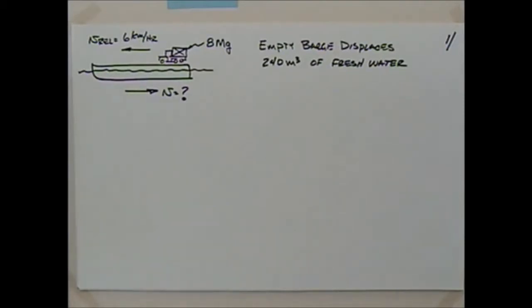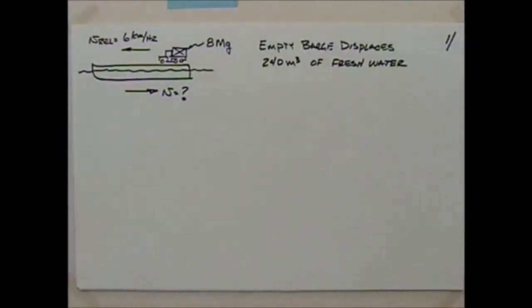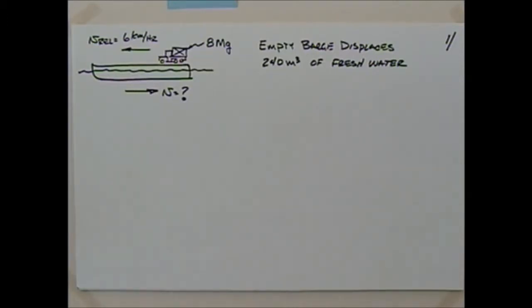We left off last time talking about impulse and momentum, and I have about another lecture to wrap up that subject. We did an interesting problem last time using a free body diagram integrating force over time. Anytime you have a force over time, you think impulse and momentum; if you have a force over distance, you think work and energy. Today we'll look at some classic conservation of momentum problems.